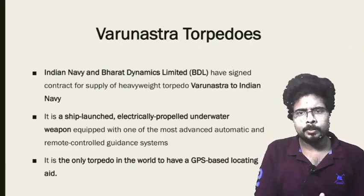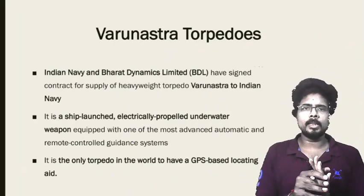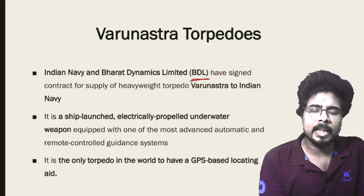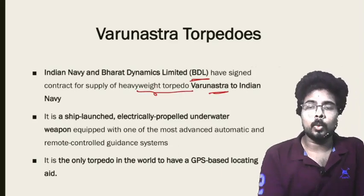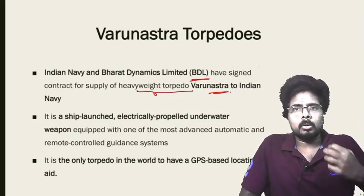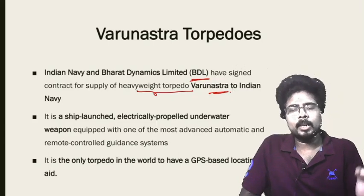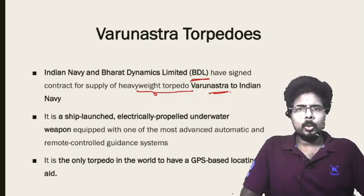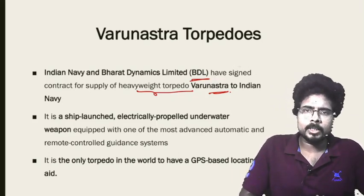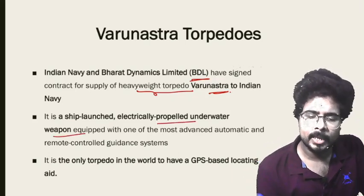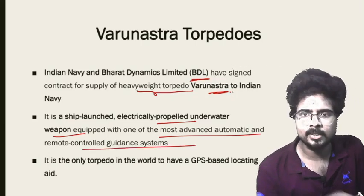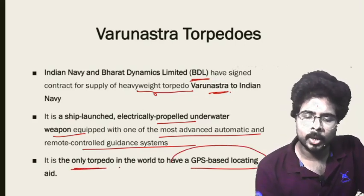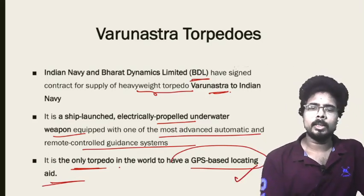Next: the Varunastra torpedo. What is a torpedo? A torpedo is a missile which is launched in the sea. The Varunastra torpedo was in the news because the Indian Navy and Bharat Dynamics Limited (BDL) signed a contract for the supply of heavyweight torpedo Varunastra. Varunastra is a ship-launched, electrically-propelled underwater weapon equipped with one of the most advanced automatic and remote-controlled guidance systems. Remember, Varunastra torpedo is the only torpedo in the world to have a GPS-based locating aid.